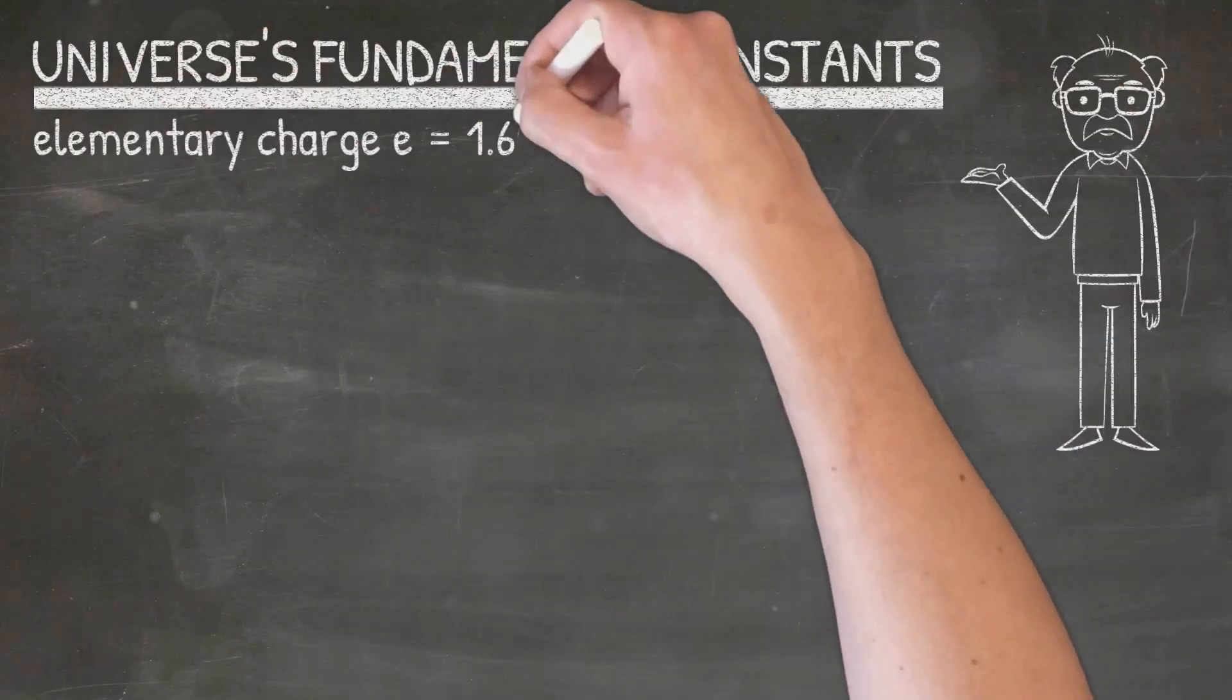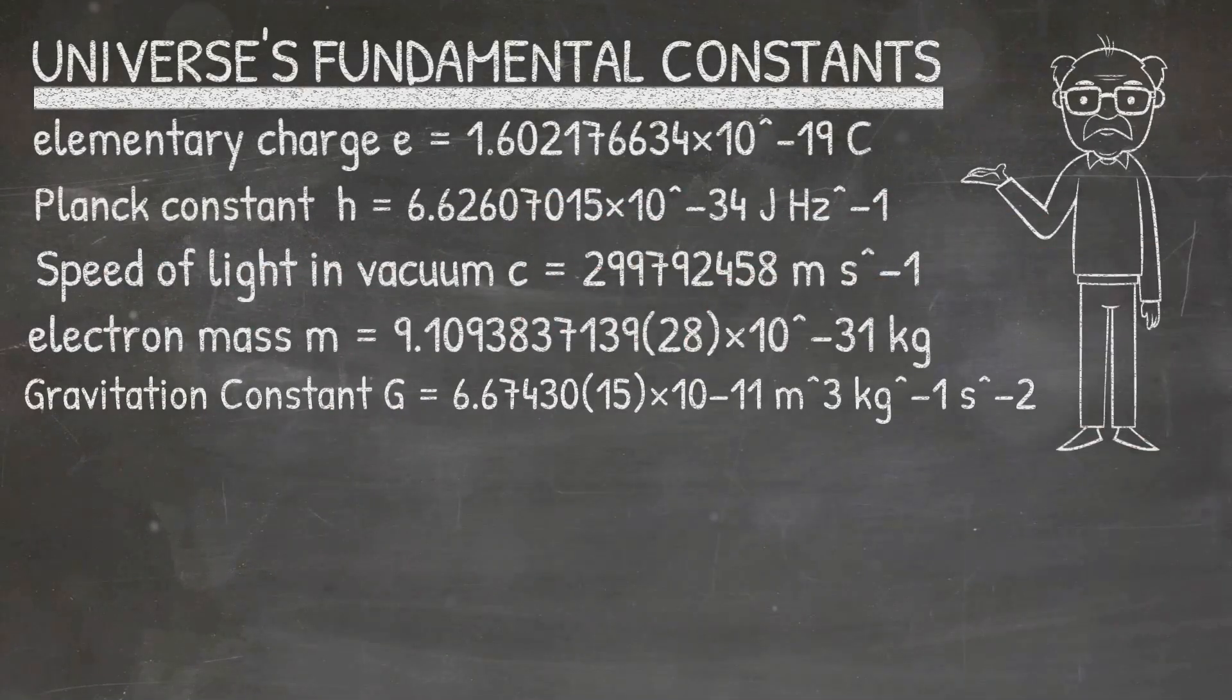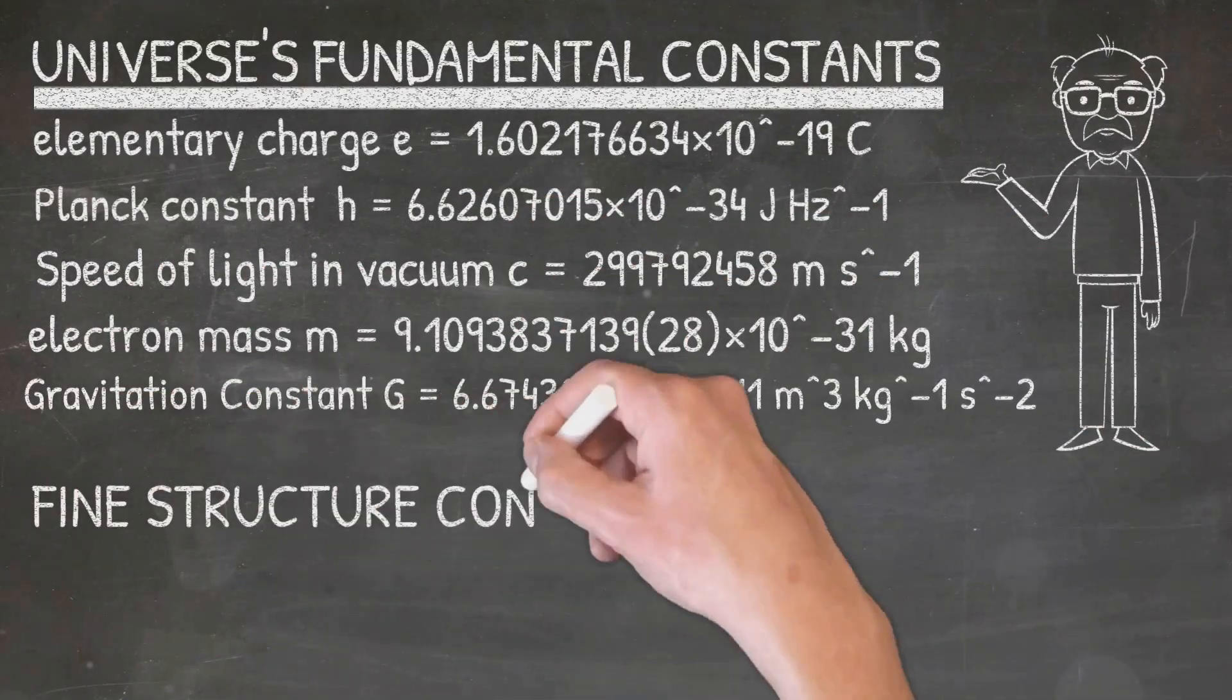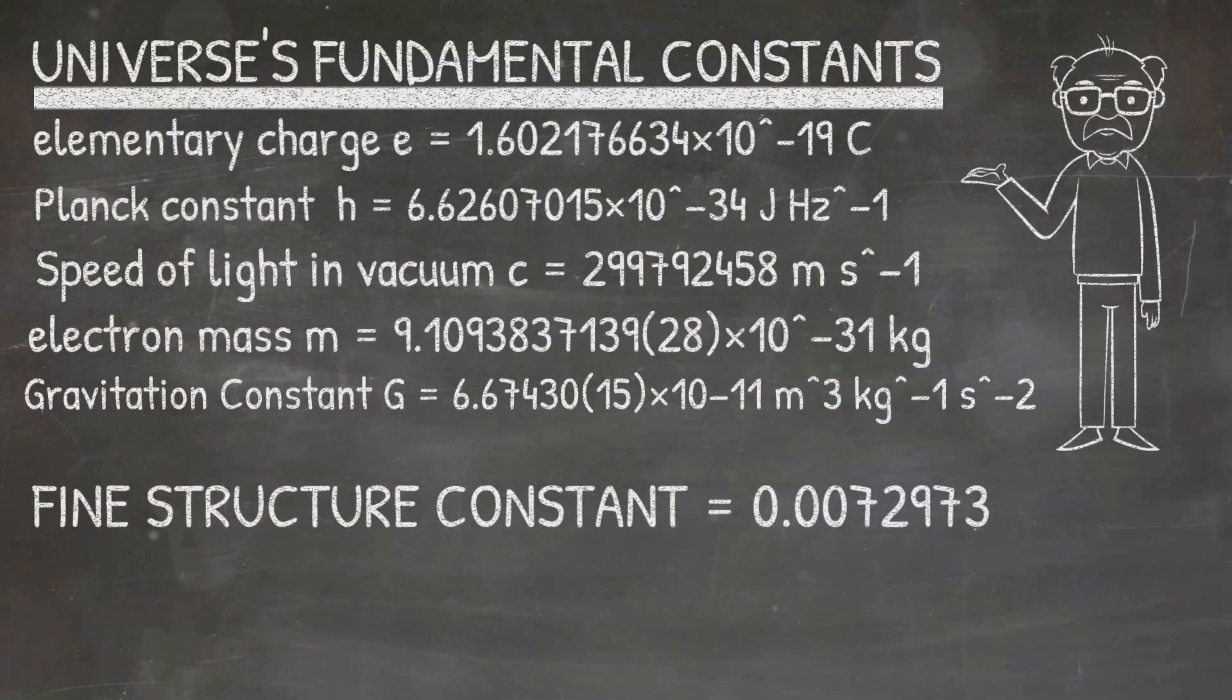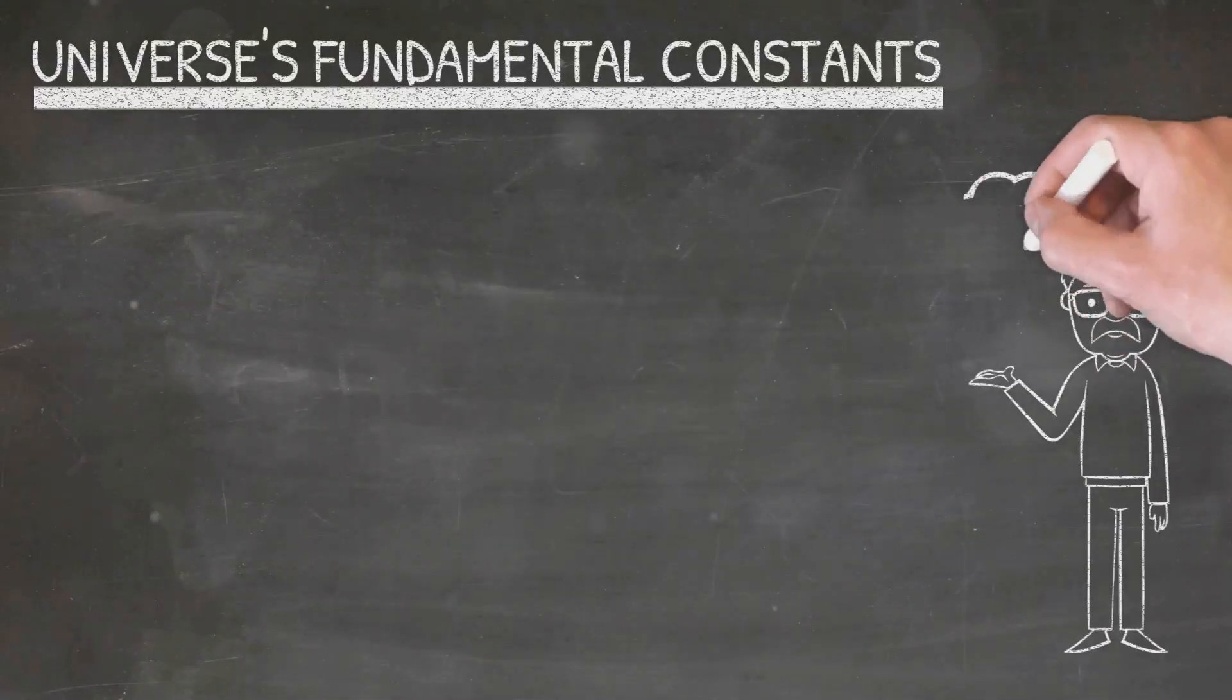Physicists have long been concerned with the numbers that describe our universe, but one number has perplexed them more than any other. That number is 0.0072973, approximately 1 over 137.